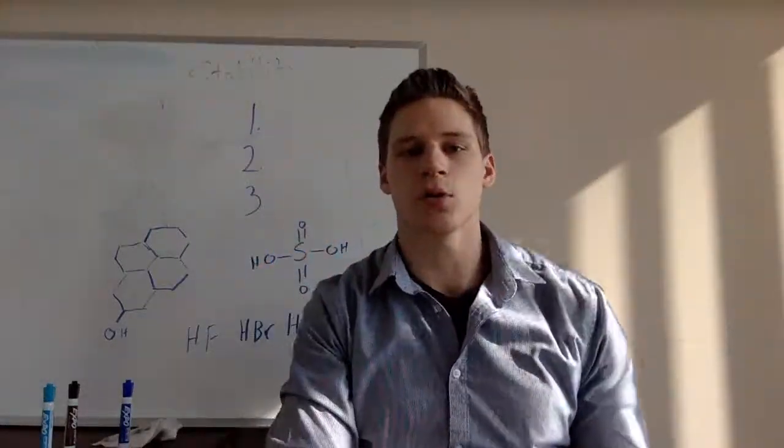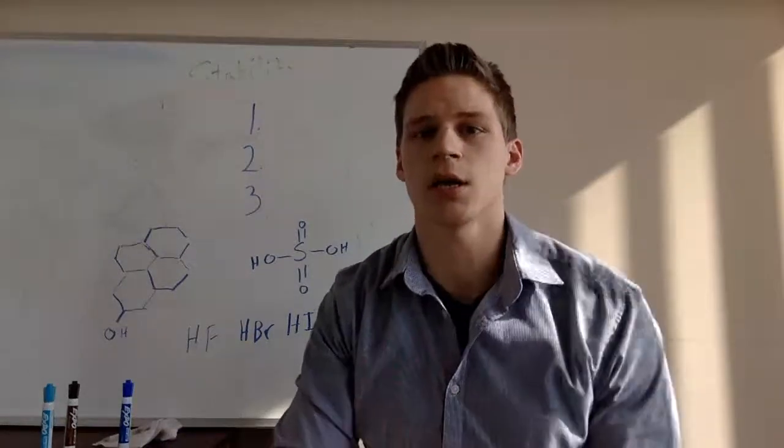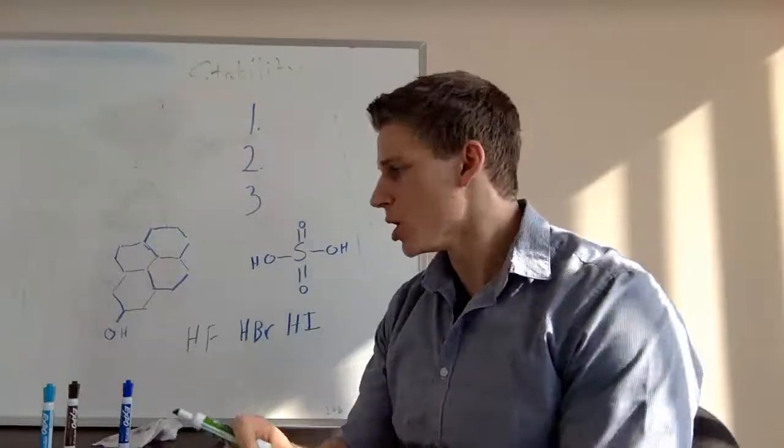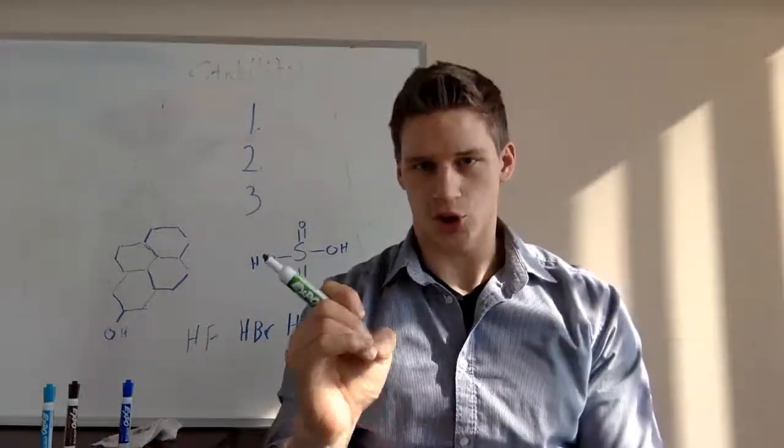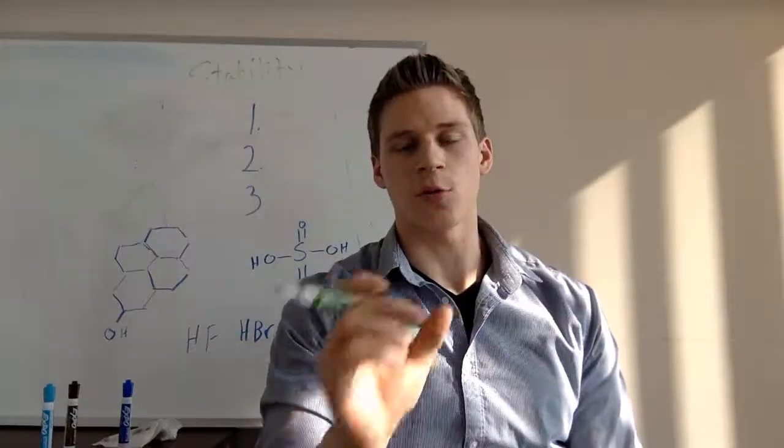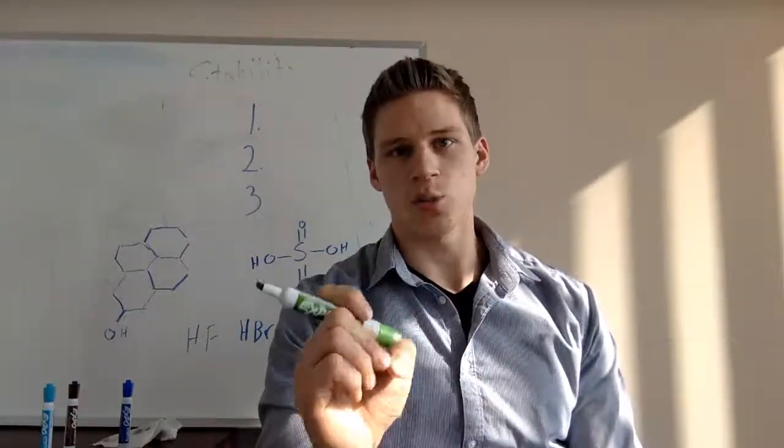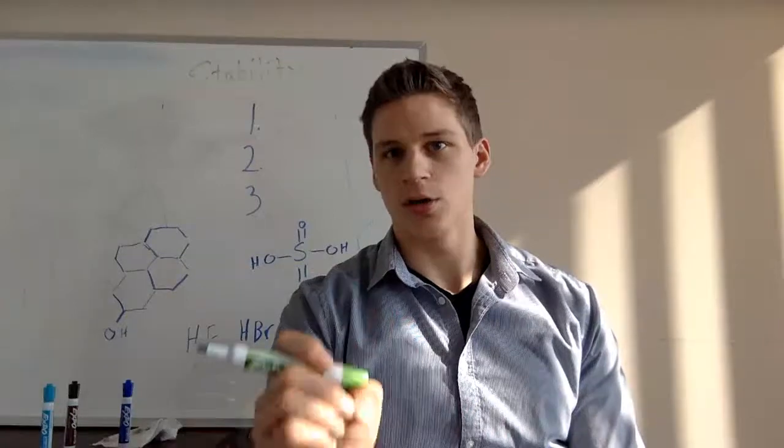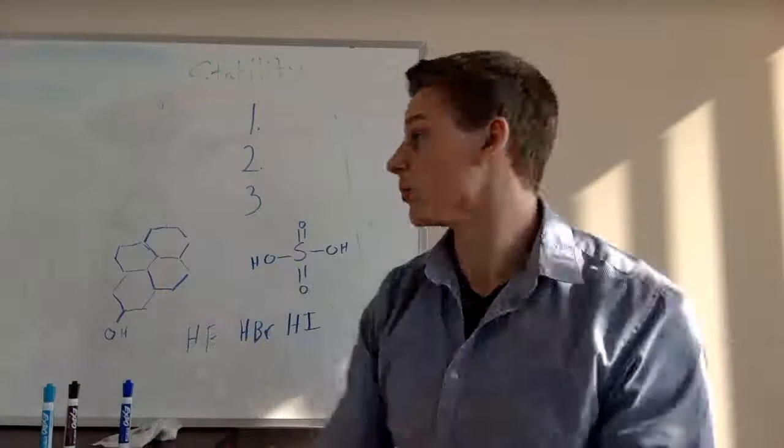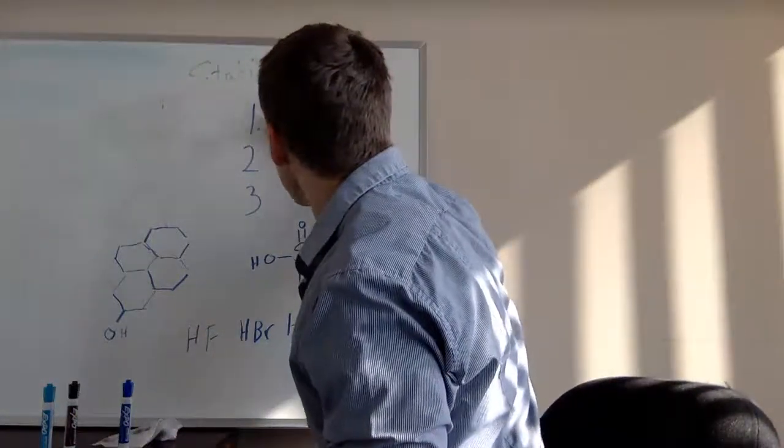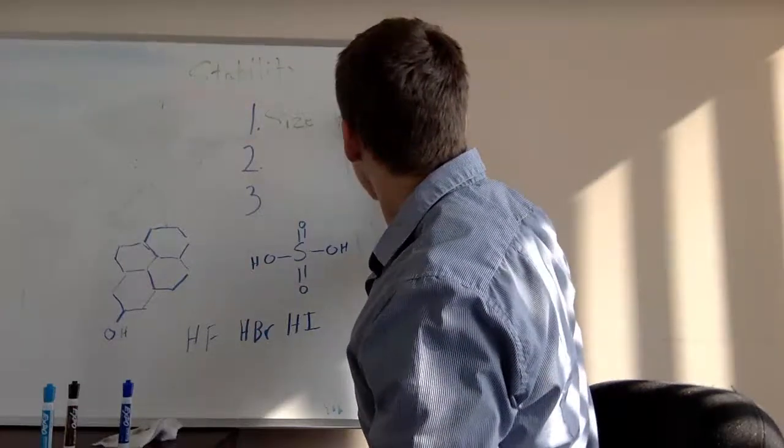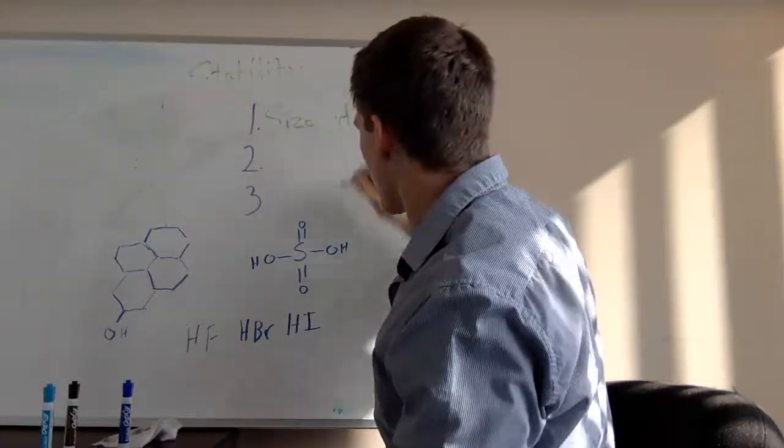There are three things you're gonna look through or look for in chronological order, and it's easiest to understand by looking specifically at acids. When we're dealing with a charge or a radical, the first thing that we want to look at is what is the size of the compound or the atom? It's the atom.